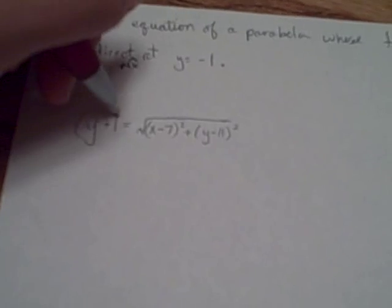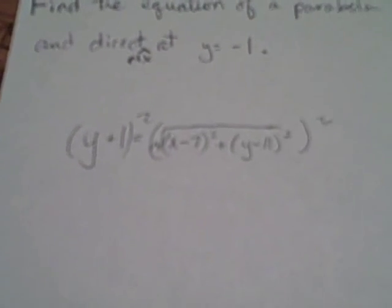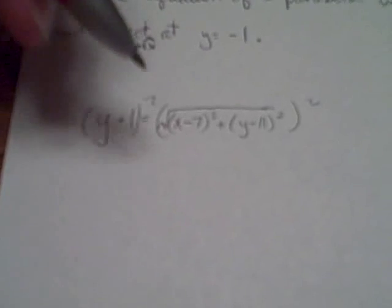The next step we want to do in this process is to get rid of that square root. Remember, we can only do good algebra steps, so if we do it on one side, we have to do it on the other side. y plus 1 quantity squared, y squared plus 2y plus 1, make sure we multiply that out appropriately.